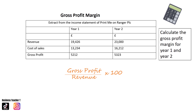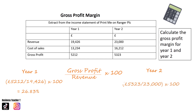You are required to calculate the gross profit margin for year one and year two — pause the video if you'd like to try. For year one, the gross profit is £5,212 divided by the sales revenue of £19,426, times by 100. For year two, the gross profit is £5,323 divided by £23,000, times by 100, giving an answer of 23.14%.